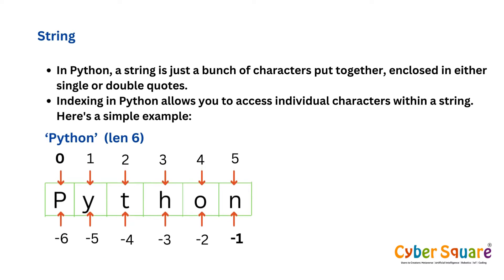In Python, a string is a bunch of characters put together, enclosed in either single or double quotes. Indexing in Python allows you to access individual characters within a string. The first element in a sequence is accessed using index 0. The last element can be accessed using index -1.